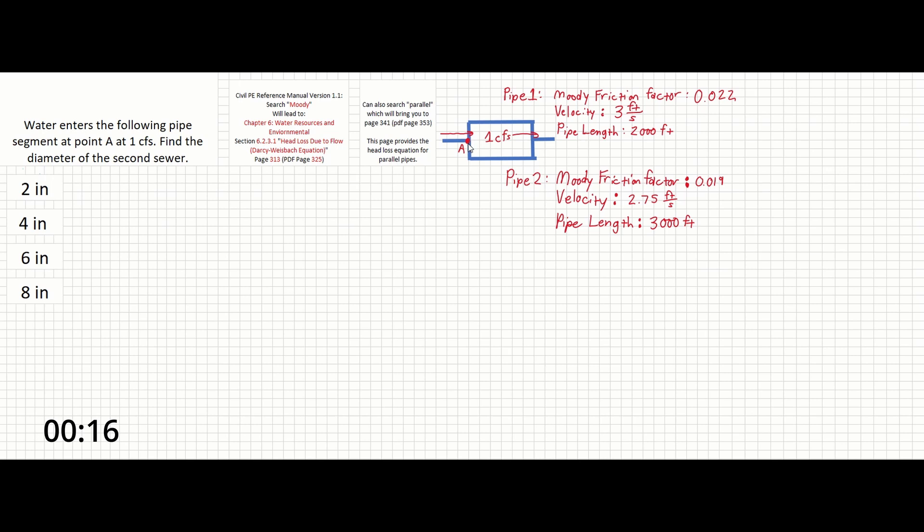Here is point A. This is the flow rate through it and we are tasked with finding the diameter of sewer number two which is going to be down here. Sewer one will be at the top.